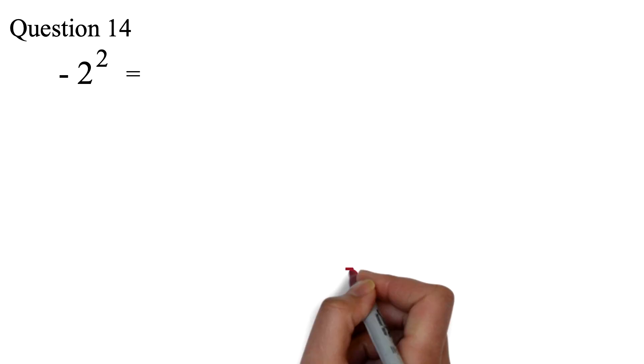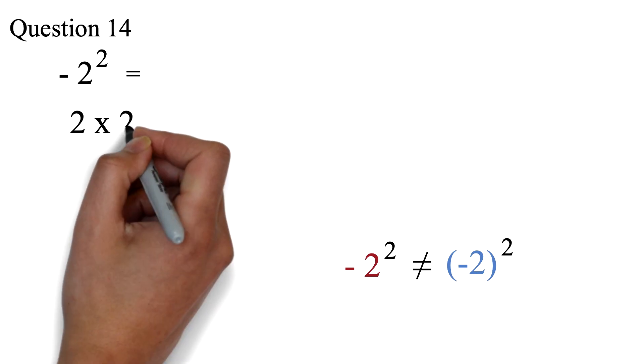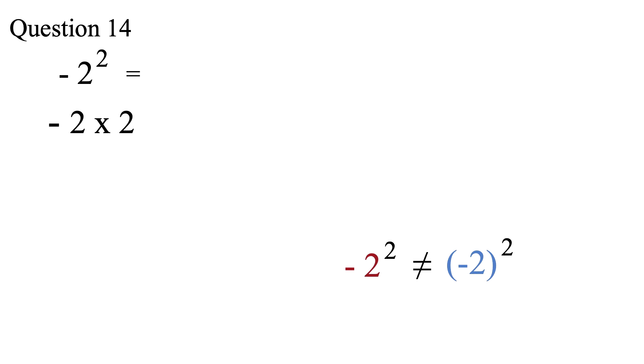Question 14, negative 2 exponent 2 equals. We were actually surprised at the number of students that were confused about our statement in our GED Math 2021 video, that negative 2 exponent 2 is not the same as negative 2 in parentheses exponent 2. We said in our previous video that exponents represent the number of times a number multiplies itself. In this question, the exponent is affecting only the 2. So we will have 2 times 2 and we have the negative in front. 2 times 2 is 4. So we will have negative 4 as our final answer.